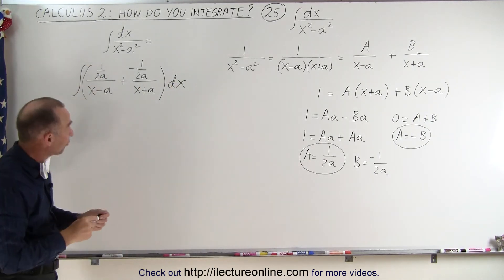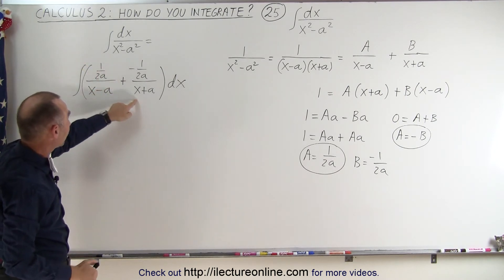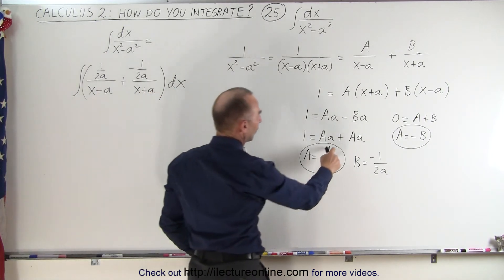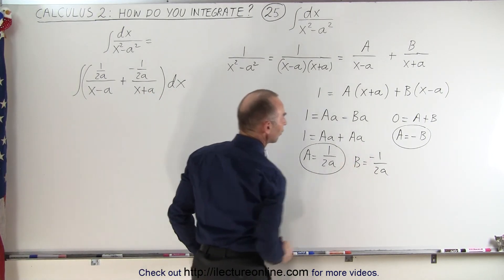So now what we've done is we've written our integral as the sum of two fractions. We have A over x minus a plus B over x minus a, where A is equal to 1 over 2a, and B is negative 1 over 2a.